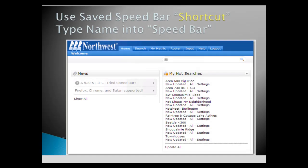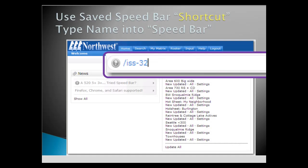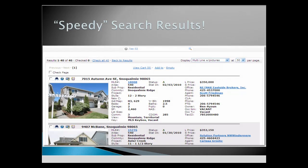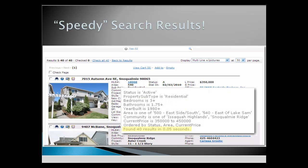Type your shortcut name into the Speed Bar window and click Enter. Remember, all shortcut names must begin with a forward slash. And your 40 townhouses arrive in 0.05 seconds.